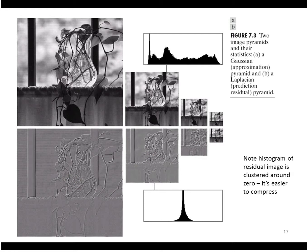One advantage of doing this is that it's easier for compression. If you look at the histogram of one of the original images in this sequence, it's all spread out. But if we look at the histogram of one of the Laplacian residual images, it's tightly clustered around zero — most values are close to zero, few are negative, few are positive. It turns out it's much easier to compress an image composed of values close to zero than values spread out everywhere.